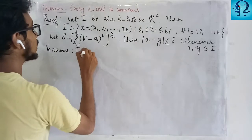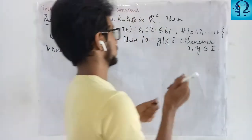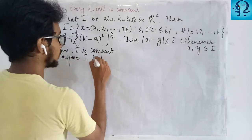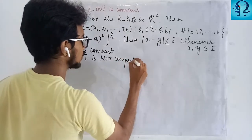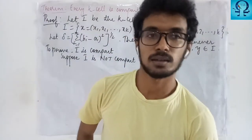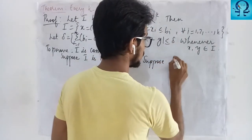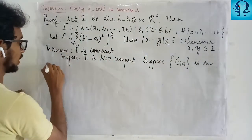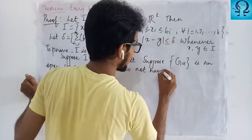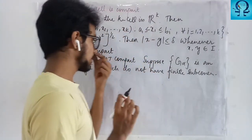We need to prove I is compact, meaning every open cover has a finite subcover. We use the contrapositive approach: suppose I is not compact. This means there exists some open cover {G_alpha} of I which does not have a finite subcover.